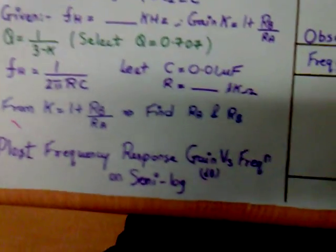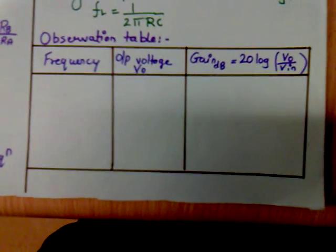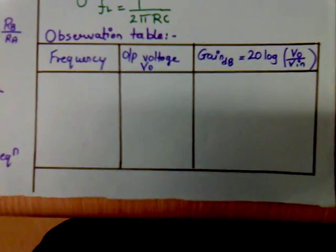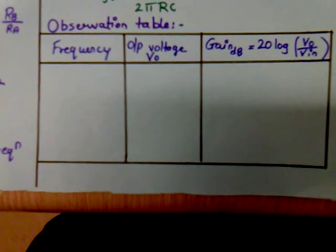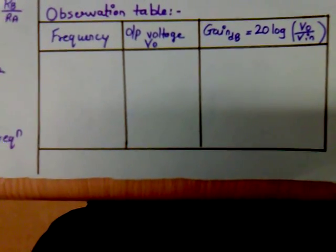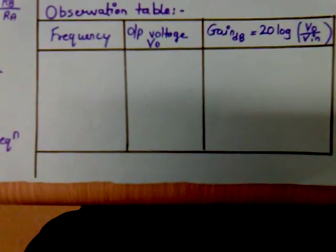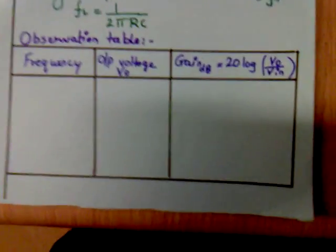After getting all the values, we can plot the frequency response of second order low pass filter for various frequencies, calculate the output voltage and hence calculate the gain in dB.